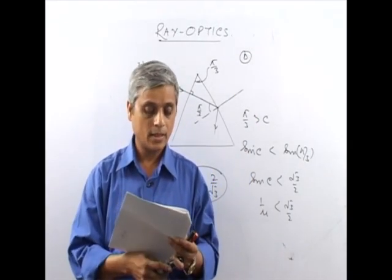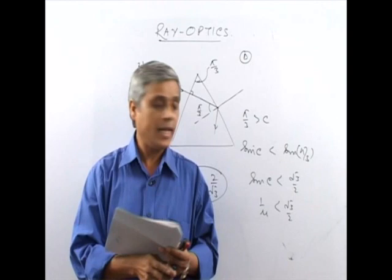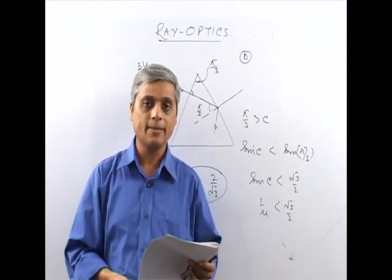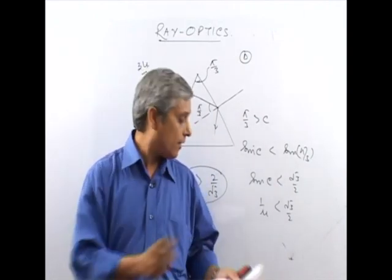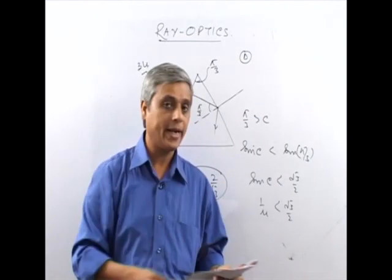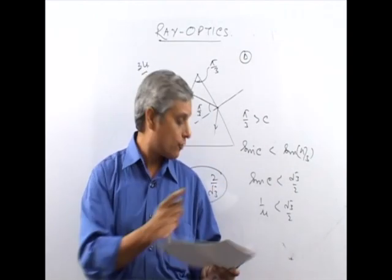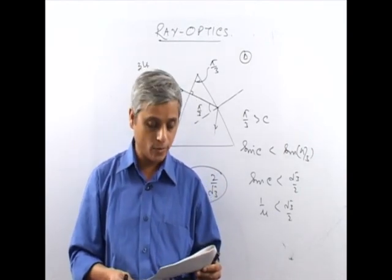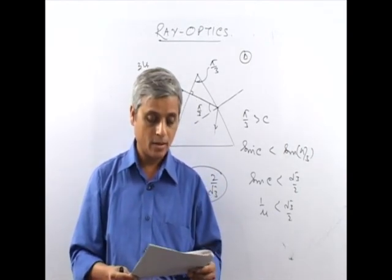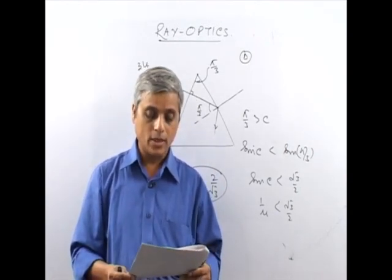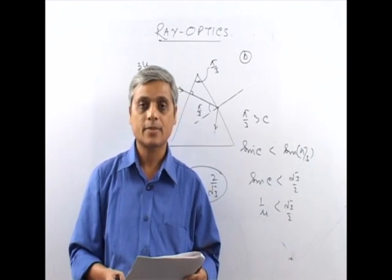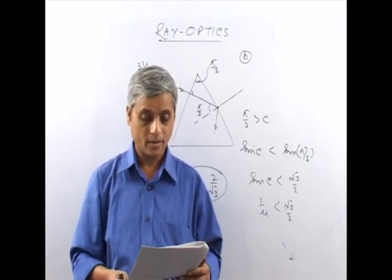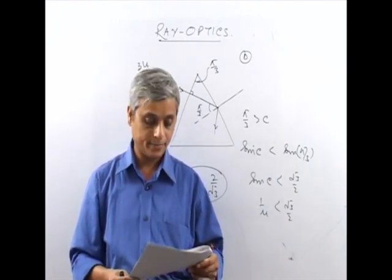Note: whenever you reciprocate an inequality, you must change the inequality sign. So the answer remains D — μ must be greater than 2/√3.